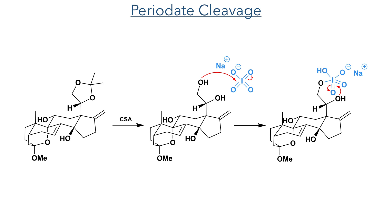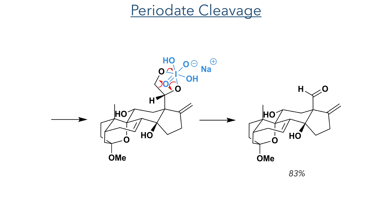Progressing forward, the acetal was then deprotected using CSA to reveal the 1,2-diol. This underwent cleavage with sodium periodate, where the iodine species sequentially binds to the two hydroxyl groups. This periodate species cleaves the diol carbon-carbon bond to produce a dialdehyde — one remaining on the substrate and the other being eliminated as formaldehyde. This reaction produced the target in an 83% yield.